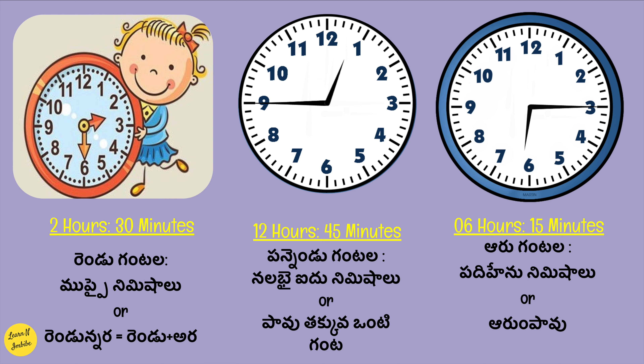You can read the clock 12 hours 45 minutes in two ways. The first way is panndu gantala nalabhai aidu nimishalu. The other way is quarter to 1 o'clock, which in Telugu is paav takkuwa onti ganta. For the last example, 6 hours 15 minutes can be read as aru gantala padihenu nimishalu, or alternatively as quarter past 6, which in Telugu is aru paavu. So that's all for today.